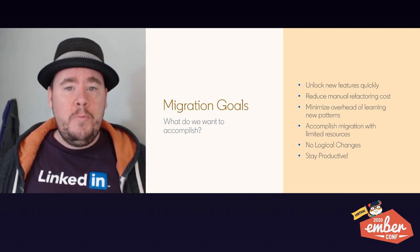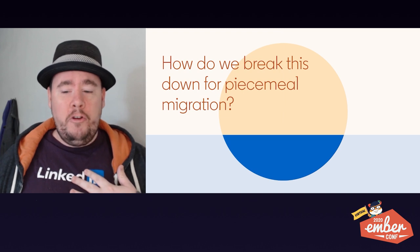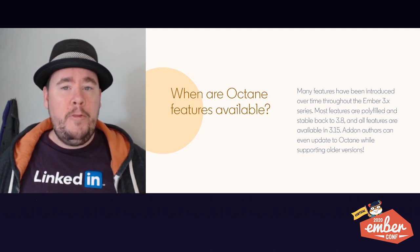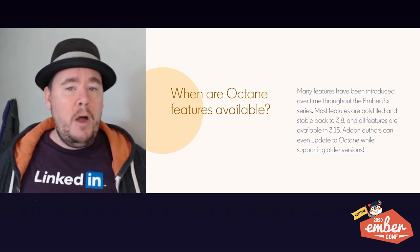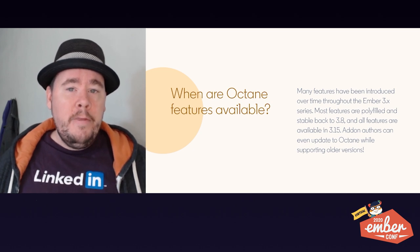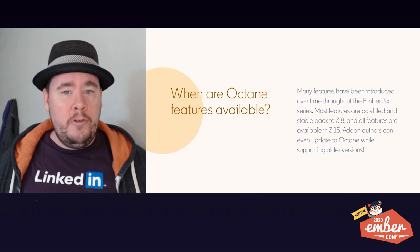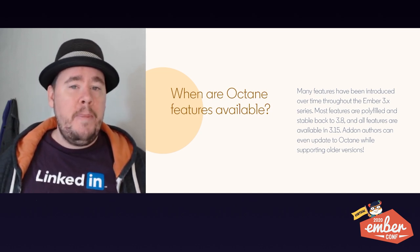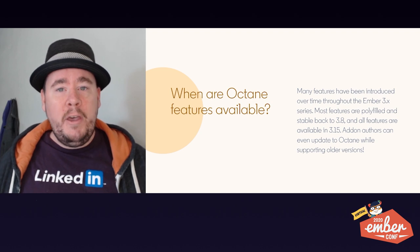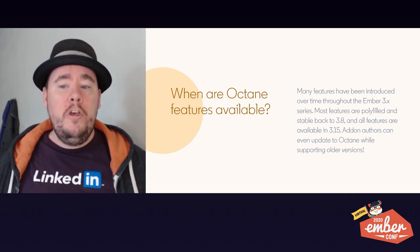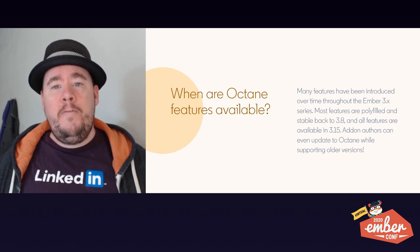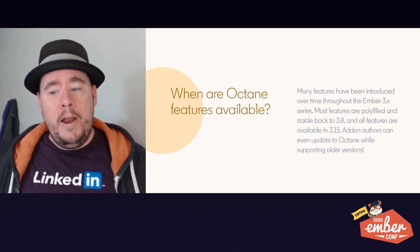So how do we break this down for a piecemeal migration? The first thing we had to ask was when are these Octane features available? Many features were introduced over time throughout the 3.x series. Most of them are polyfilled and stable back to Ember 3.8, and all of the features were finally available in Ember 3.15. This is important to note because add-on authors may be trying to support older versions of Ember, but because there are polyfills that support these features back to older versions, add-on authors can actually start updating to Octane today, even if the apps consuming them aren't on Ember 3.15 yet.